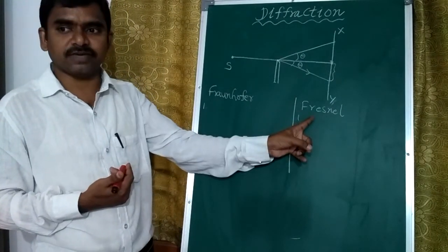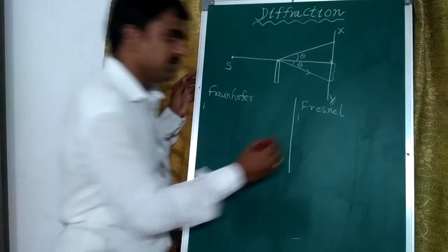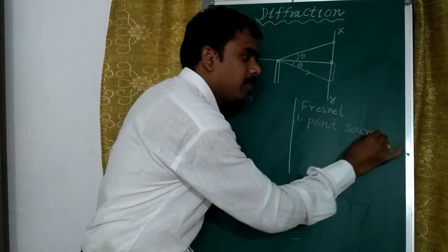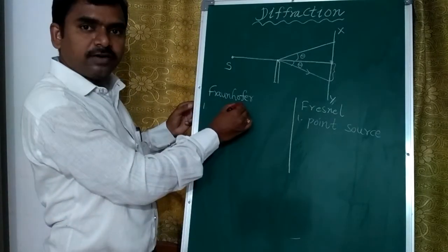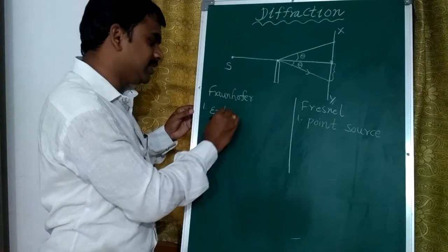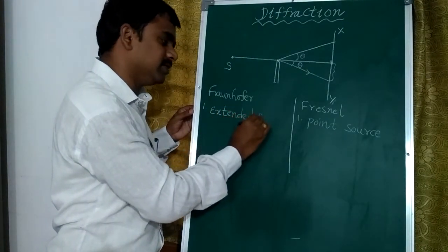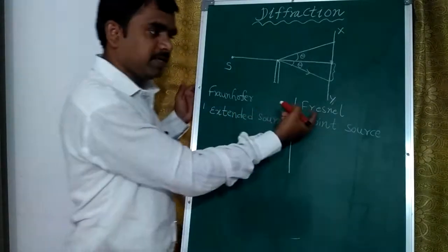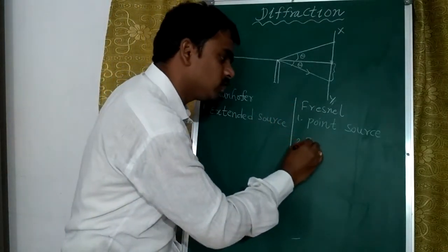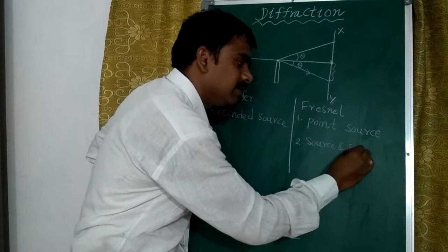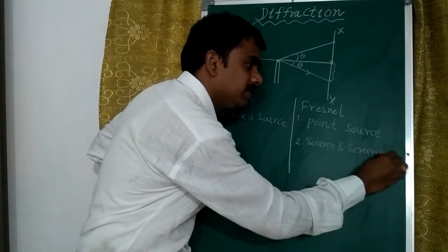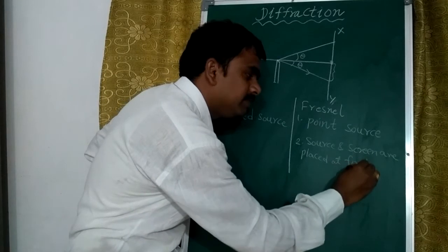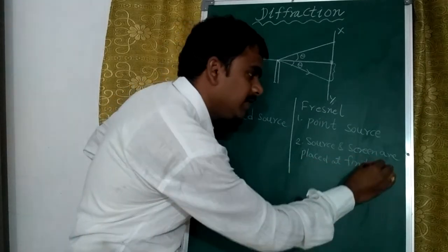In Fresnel's diffraction, the source is a point source. The source and screen are placed at a finite distance from the obstacle producing the diffraction.